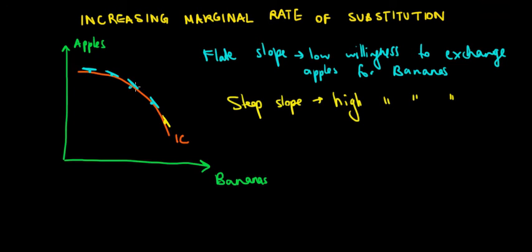Now what's the intuition? The intuition is that in the beginning, we're not really willing to give up apples for bananas, for one more banana. But as we have more bananas, we want more and more of it. So as we move along the curve,